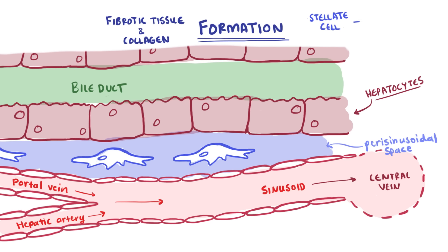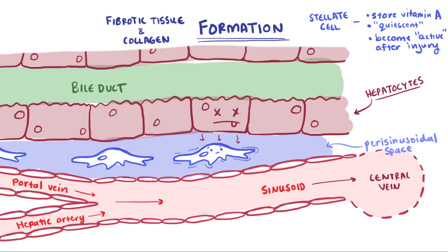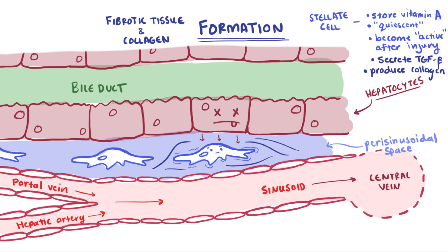Usually, in healthy tissue, these stellate cells' main function is to store vitamin A, and they are otherwise considered quiescent, or dormant. When the hepatocytes are injured, they secrete paracrine factors that activate and change the stellate cells. When activated, these stellate cells lose vitamin A, proliferate, and start secreting transforming growth factor beta-1, or TGF-beta, which then causes them to produce collagen — the main ingredient in extracellular matrix, fibrosis, and scar tissue.